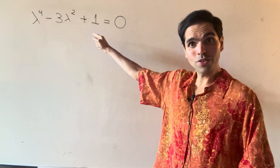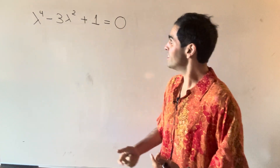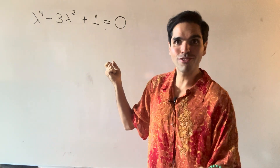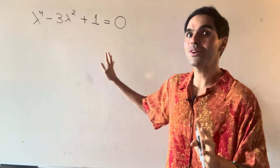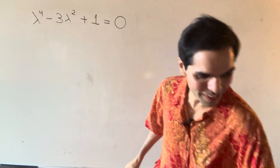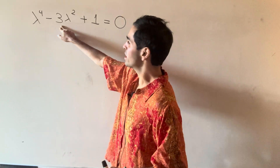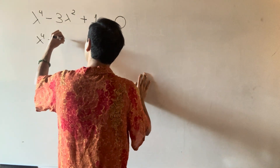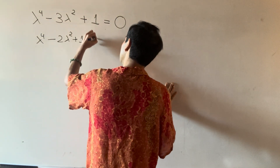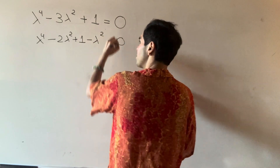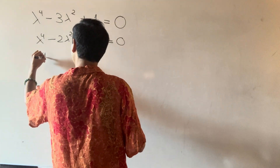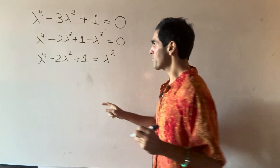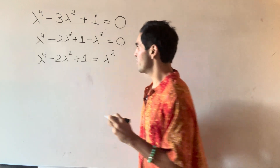Now, in order to solve this equation, you have two choices. One is to let u be lambda squared and then use the quadratic formula. But here's actually a cooler trick — a cool algebraic trick. Namely, what you can do is separate out one of the lambda squares. So we get lambda to the fourth minus two lambda squared plus one minus lambda squared equals zero, which gives you lambda to the fourth minus two lambda squared plus one equals lambda squared. And the cool thing is this now becomes a perfect square.